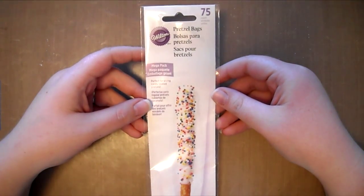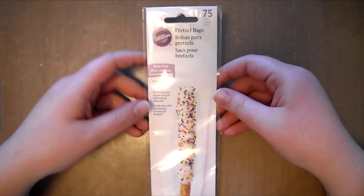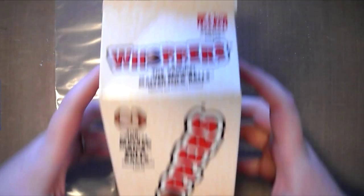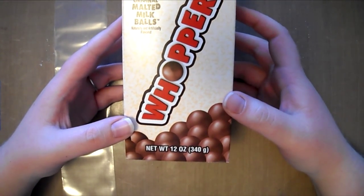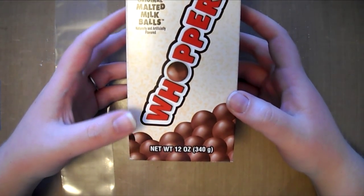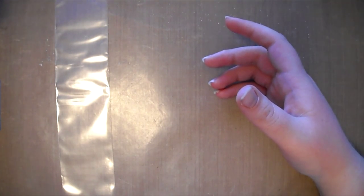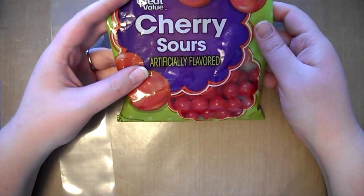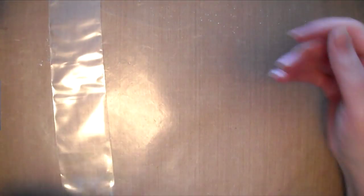Now I can move on to creating the treat bag itself. For this, I will be using these pretzel bags that I picked up from Joann's. They are originally meant for pretzel rods, so they are rather long, but I will be trimming them down later. As for the reindeer noses, I decided to use Whoppers, and for Rudolph's nose, I will be using Sour Cherry Candies. It's completely up to you what you want to use. These are just some examples.